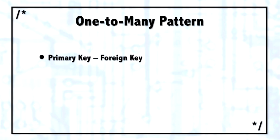The most common pattern is the one-to-many pattern, meaning that there's one row in the primary table with a primary key, and it relates to multiple rows in the secondary table using a foreign key.